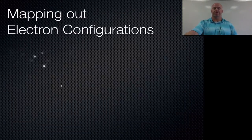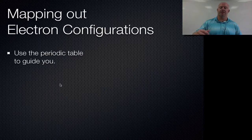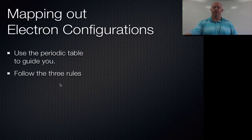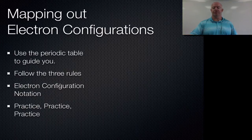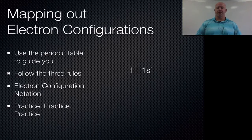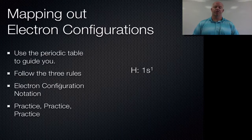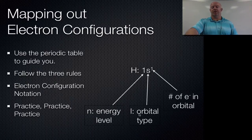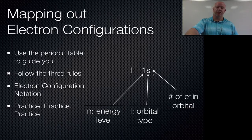Let's go through and actually build some now. When we use the periodic table to guide us, we've got to remember to follow our 3 rules. In electron configuration notation, there are 3 things you write: the energy level (numerical value), the orbital type (S, P, D, or F), and how many electrons go in there. Remember: S can have 2, P can have up to 6, D can have up to 10, and F can have up to 14.